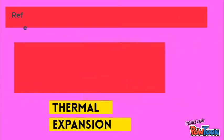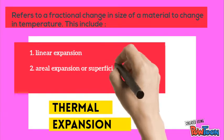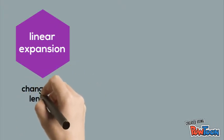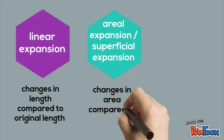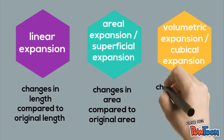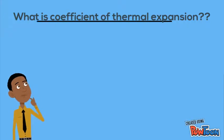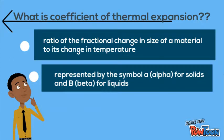Thermal expansion refers to a fractional change in size of a material due to a change in temperature. This includes: first, linear expansion; second, area expansion or superficial expansion; and third, volumetric expansion or cubical expansion. The coefficient of thermal expansion is the ratio of the fractional change in size of a material to change in temperature. It is represented by the symbol alpha for solids and beta for liquids. The SI unit for coefficient of thermal expansion is 1 per Kelvin.